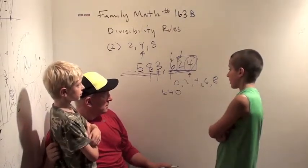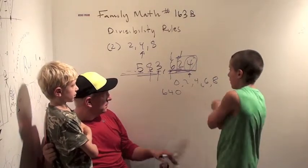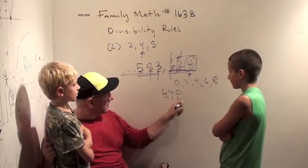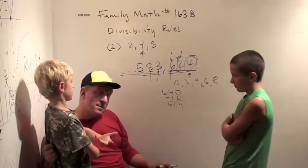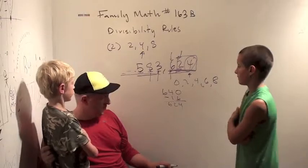So it is divisible by 8 because it's 640 minus 16. It's 640 minus 16 is 624. And 16 is what times 4? Or 8 times 2. 8 times 2. So good.